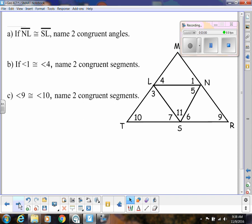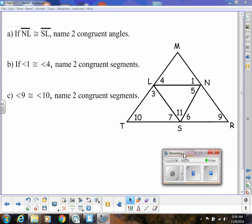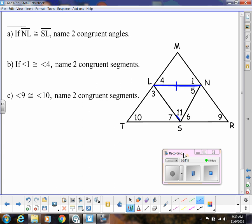So let's apply this a little bit. So in this diagram, we know that NL, which is right here, that segment, is congruent to segment SL. So that's telling me that middle triangle is isosceles and angle L is the vertex angle. And so if we know that, then the base angles have to be congruent. So going across from those legs. So if I'm going across from that leg, that's angle 5, and across from that leg, that's angle 11. So angle 5 would be congruent to angle 11.